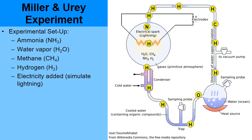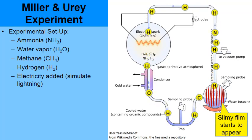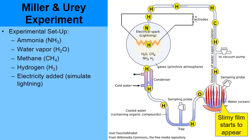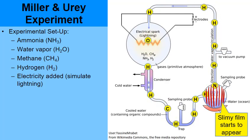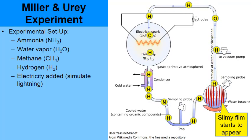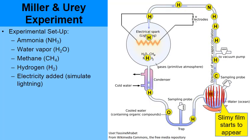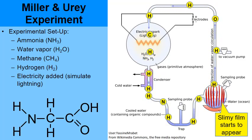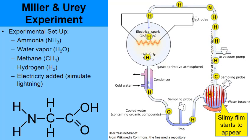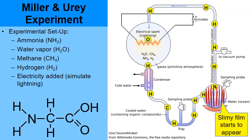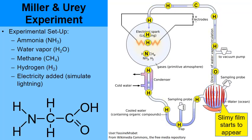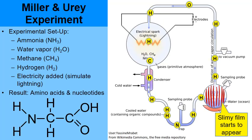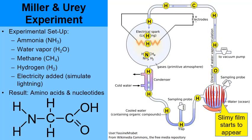The electrical sparks broke apart the molecules of ammonia, water vapor, methane, and hydrogen. After a day or so, a slimy film began to appear in a small chamber on the lower right side of the apparatus. They chemically analyzed this film and found a structure with an NH₂ group on the left — an amino group — and a COOH on the right — a carboxyl group. That's an amino acid.